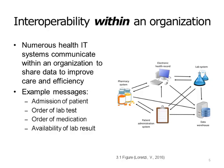This slide includes a diagram. We have a patient administration system where a patient would be first recorded as admitted. That message might flow to the EHR, the hospital pharmacy system, the hospital laboratory system, and the hospital's data warehouse. On the EHR, a doctor may record a lab order, which would flow to the laboratory system and data warehouse. The doctor may also record a medication order, which would flow from the EHR to the pharmacy system and data warehouse. When the laboratory finishes processing, it would send that result back to the EHR and data warehouse. These are some examples of interoperability within an organization.